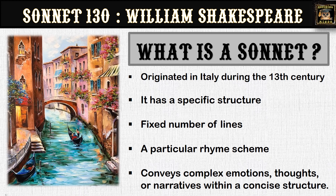You must be wondering what is a sonnet? A sonnet is a poetic form that actually originated in Italy during the 13th century. It has a fixed number of lines — that is, 14 lines — a specific rhyme scheme, and a different rhythm. Apart from that, the beauty of a sonnet lies in the fact that it can portray complex ideas, emotions, thoughts, or narratives in a very concise and brief manner.